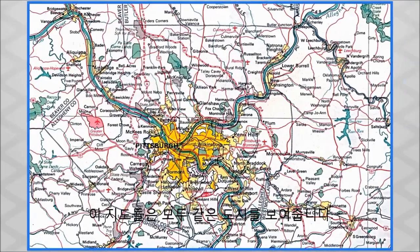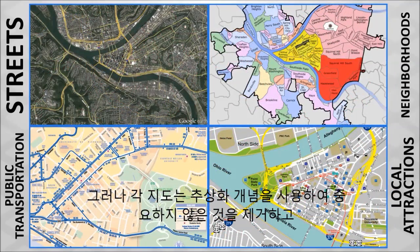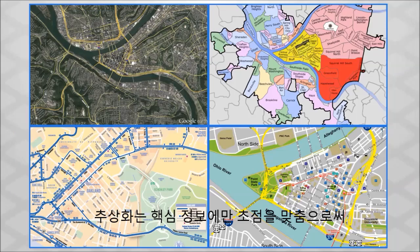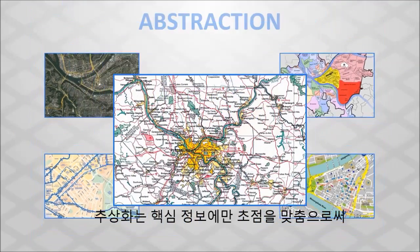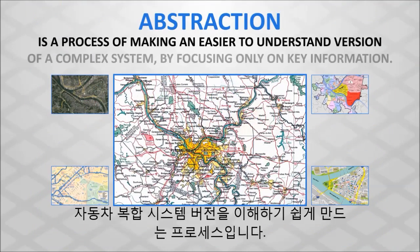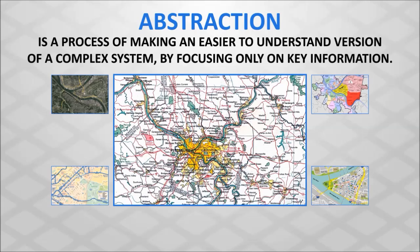All of these maps show the same city, but each map uses the concept of abstraction to remove what is unimportant and focus on what is important to the user. Abstraction is the process of creating an easier to understand version of a complex system by focusing only on key information.